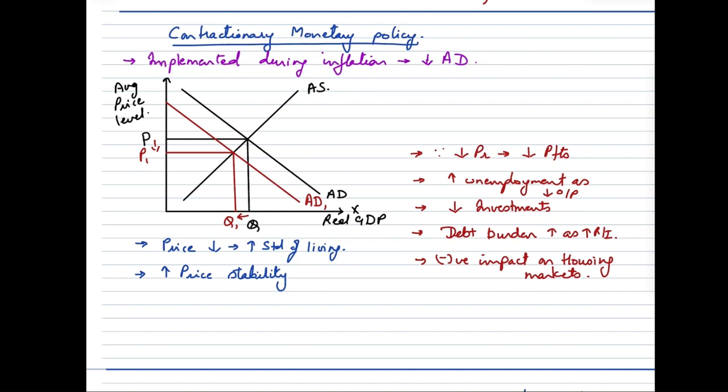So as far as the benefits are concerned, we do see that the prices are going down thereby contributing to a higher standard of living for the people, a more stabilized price situation in the economy. But on the flip side, since the prices are going down, that means there are lower profits for the businesses and producers, because of which there would be high unemployment, since we see that there is a reduction in the overall GDP in the economy.